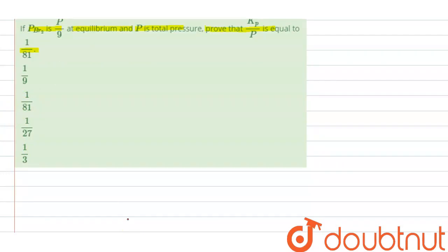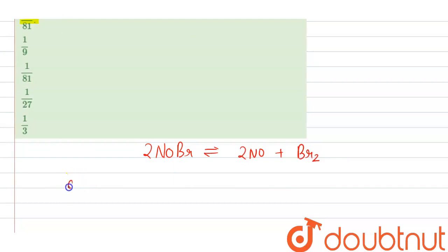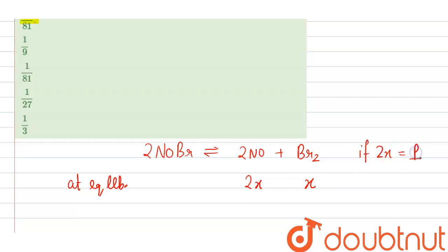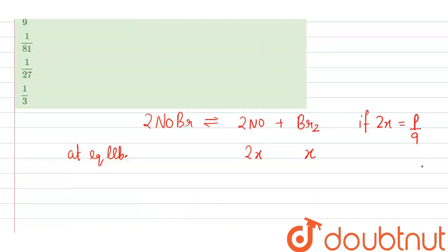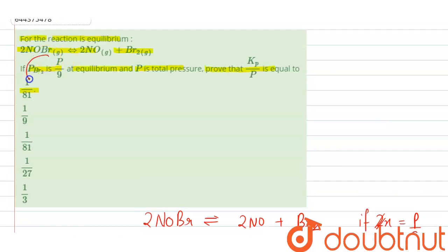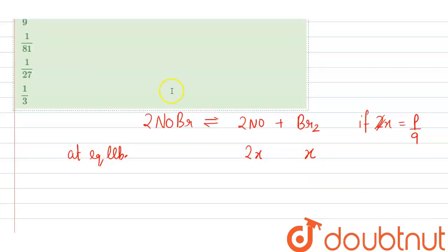In the given question, the reaction is: 2NOBr gives 2NO + Br₂ at equilibrium. The moles of NO will be twice as compared to Br₂. So if x equals p/9, then 2x will become 2p/9. Since the pressure of Br₂ is p/9, the pressure of NO is 2p/9.